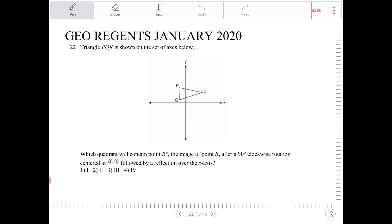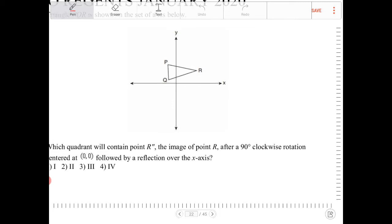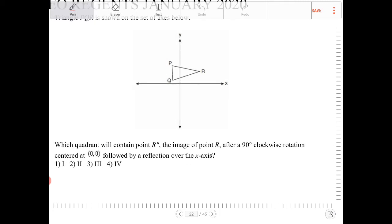Which quadrant will contain point R', the image of point R after a 90 degree clockwise rotation centered at 0,0 followed by a reflection over the x-axis. Okay, so let's try to get a sense of where everything's supposed to be oriented.